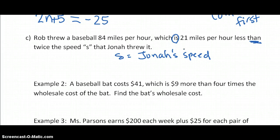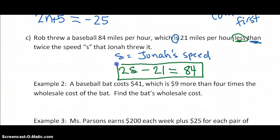Now let's read that sentence again. Rob threw a baseball 84 miles per hour, which is, so 84 is, what is it? It is 24 less than, so whatever I'm about to read next after than is going to go first, less than twice the speed S. So twice S goes first, and it's 21 less, so less tells me to subtract, 21 less than twice S, and I like to put a little tail on my S. So that is the equation for that sentence.